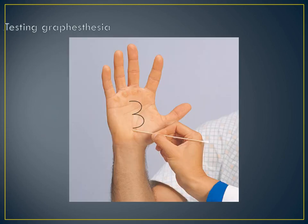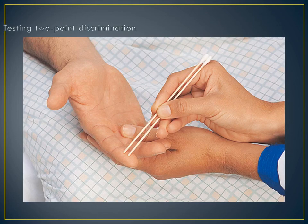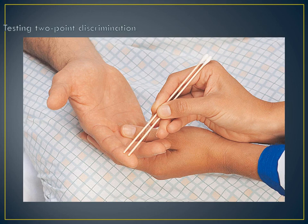Testing graphesthesia is nothing more than the ability to recognize writing on the skin purely by the sense of touch — this is actually checking sensation. This is testing two-point discrimination — can they feel that there are actually two different points from the Q-tips, or do they just sense it as one? You would do one Q-tip and they'd say there's just one item, then you change it to two. Once again, this is checking for sensation.